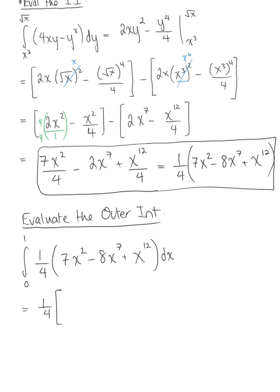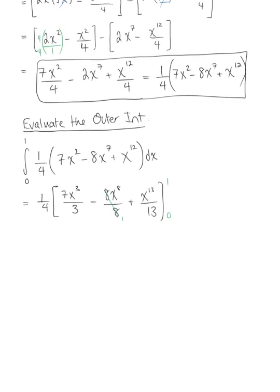So this one-fourth times, so we're just using our power rule here for the power rule of our anti-differentiation rules. So this will be 7x cubed over 3 minus 8x to the eighth over 8, which we'll simplify, plus x to the 13 over 13. So these eights cancel, and don't forget, we have bounds from 0 to 1. So plugging our bounds in here, we keep one-fourth on the outside. So plugging in one first, we're going to have 7 thirds minus 1 plus 1 thirteenth minus, and then when we plug in zero here, everything disappears, leaving us with zero.